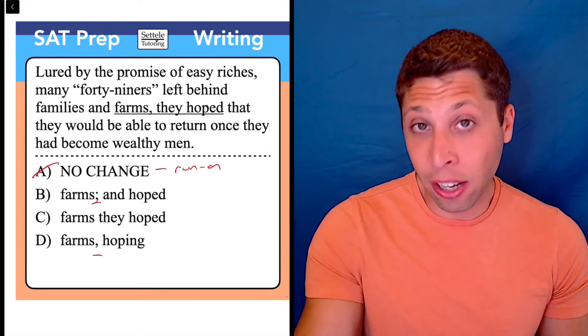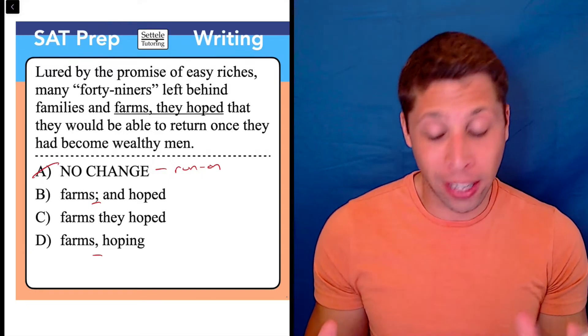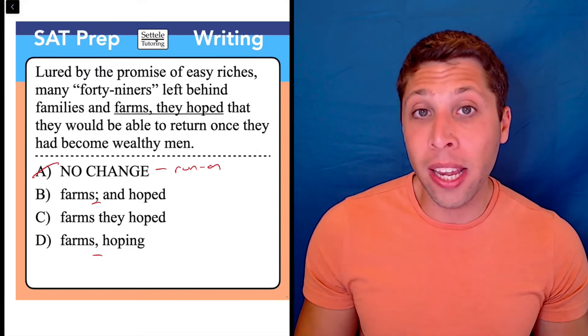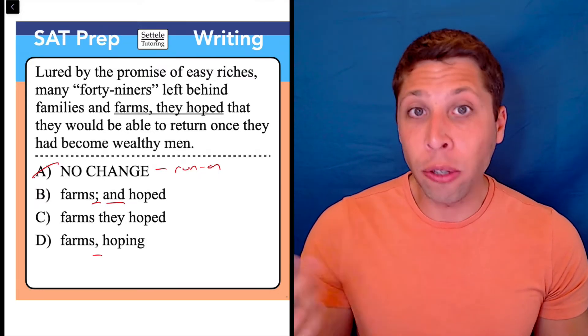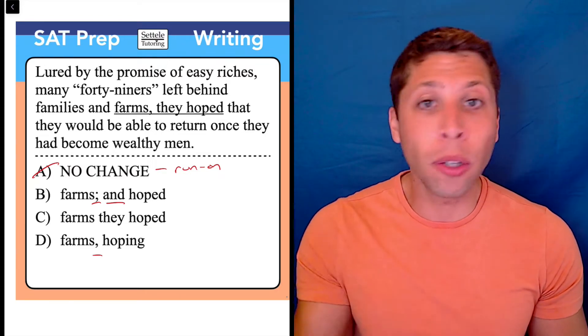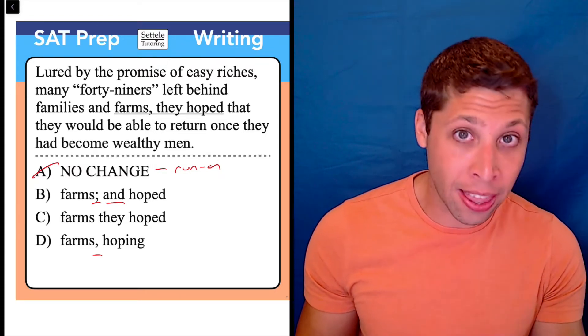So in this case, there's a couple of ways that they try to fix it. We do know that in choice B, a semicolon is used to join two complete sentences, but they kind of overcorrect. They use the conjunction 'and' as well, and we wouldn't want to use both the semicolon and the 'and.'